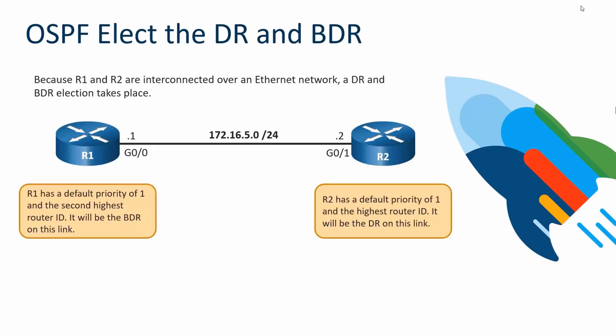In the Two-Way state, an election occurs for the Designated Router (DR) and Backup Designated Router (BDR). This election only occurs on multi-access networks such as Ethernet. Routers have a default priority of 1 on their links; since both are defaulted at 1, it's a tie, so the tiebreaker goes to the highest router ID. R2 has 172.16.5.2 and becomes the DR; R1 has the lower IP of 172.16.5.1 and becomes the BDR.